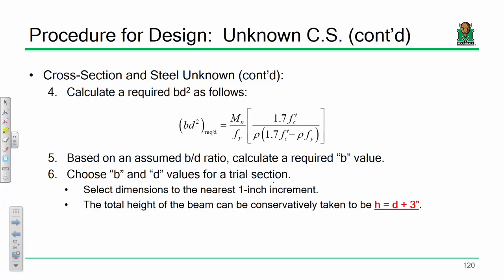One thing I want to note: select dimensions to the nearest one-inch increment. Do not give me a beam design with a beam width of 10.62 inches. For our purposes, just go to the nearest inch — sometimes nearest two inches makes sense if you're using ready-made forms. We've got B values and D values, and the height of the beam, based on cover requirements, we're conservatively going to take as D plus three inches.